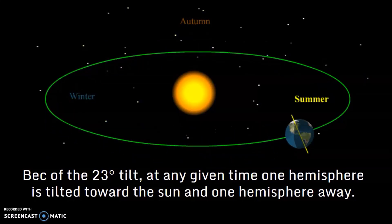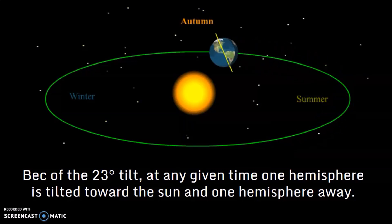Because of the 23 degree tilt, at any given time, one half of Earth is going to be tilted towards the Sun, and the other half, or hemisphere, is going to be tilted away.